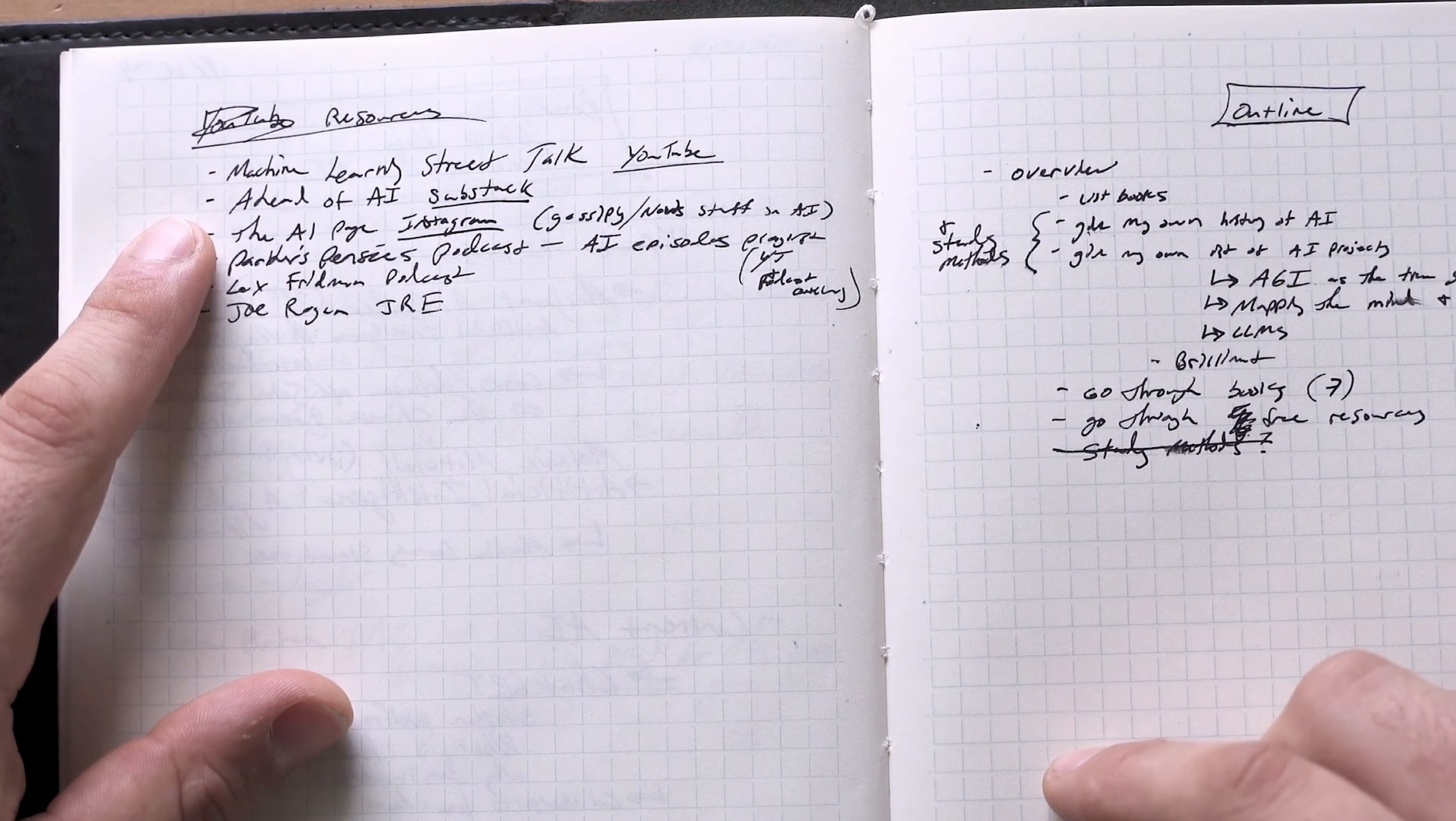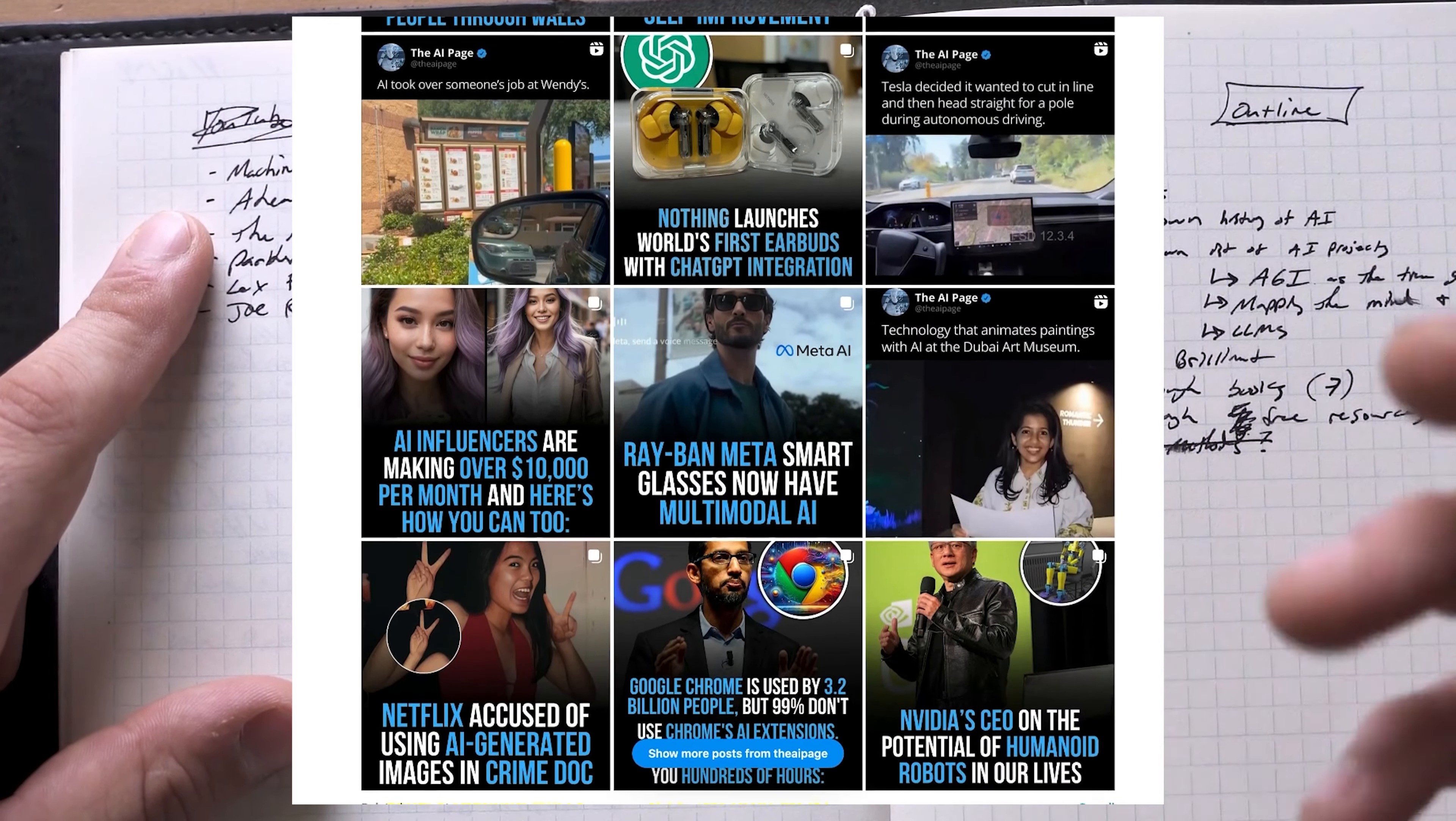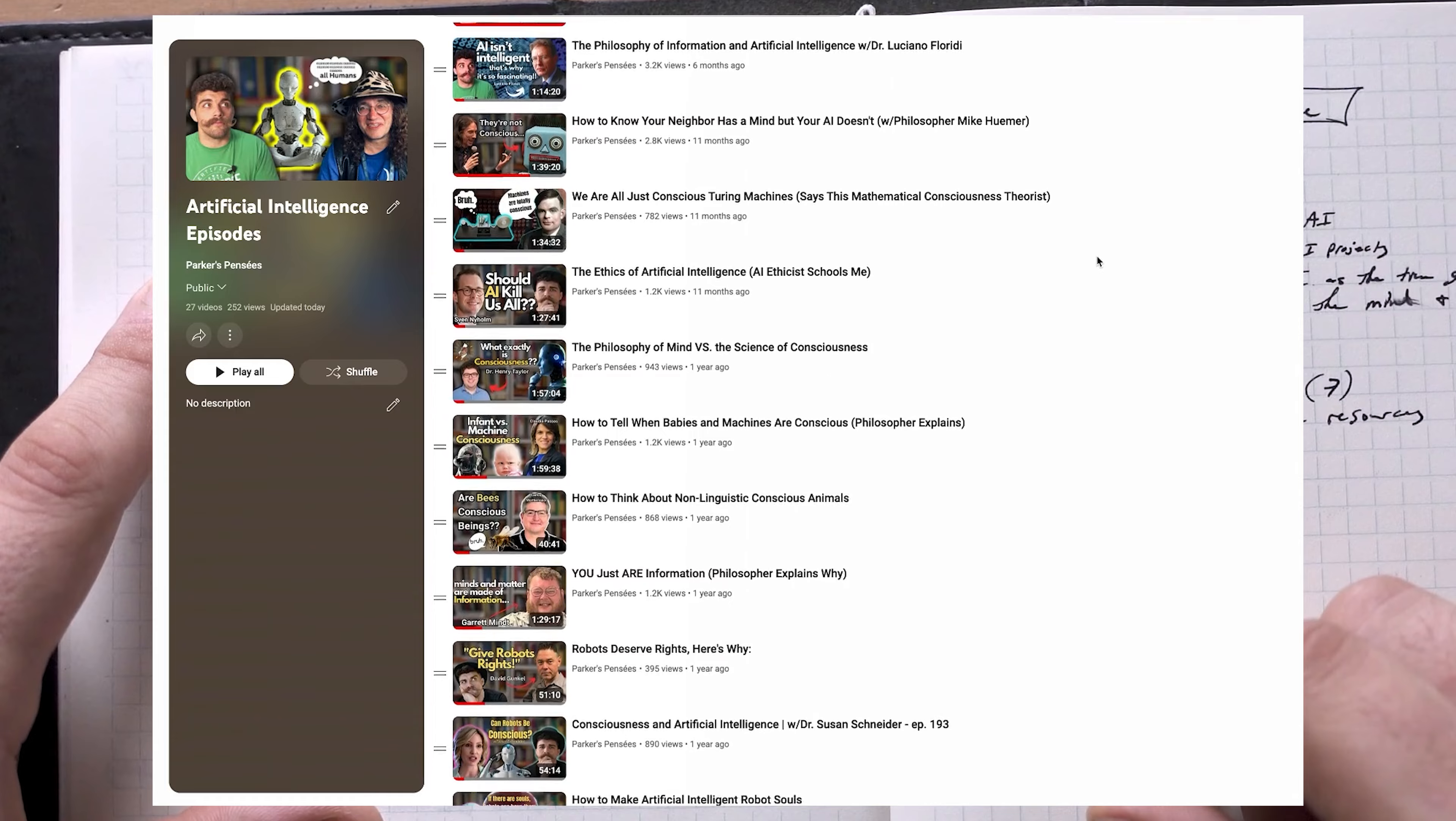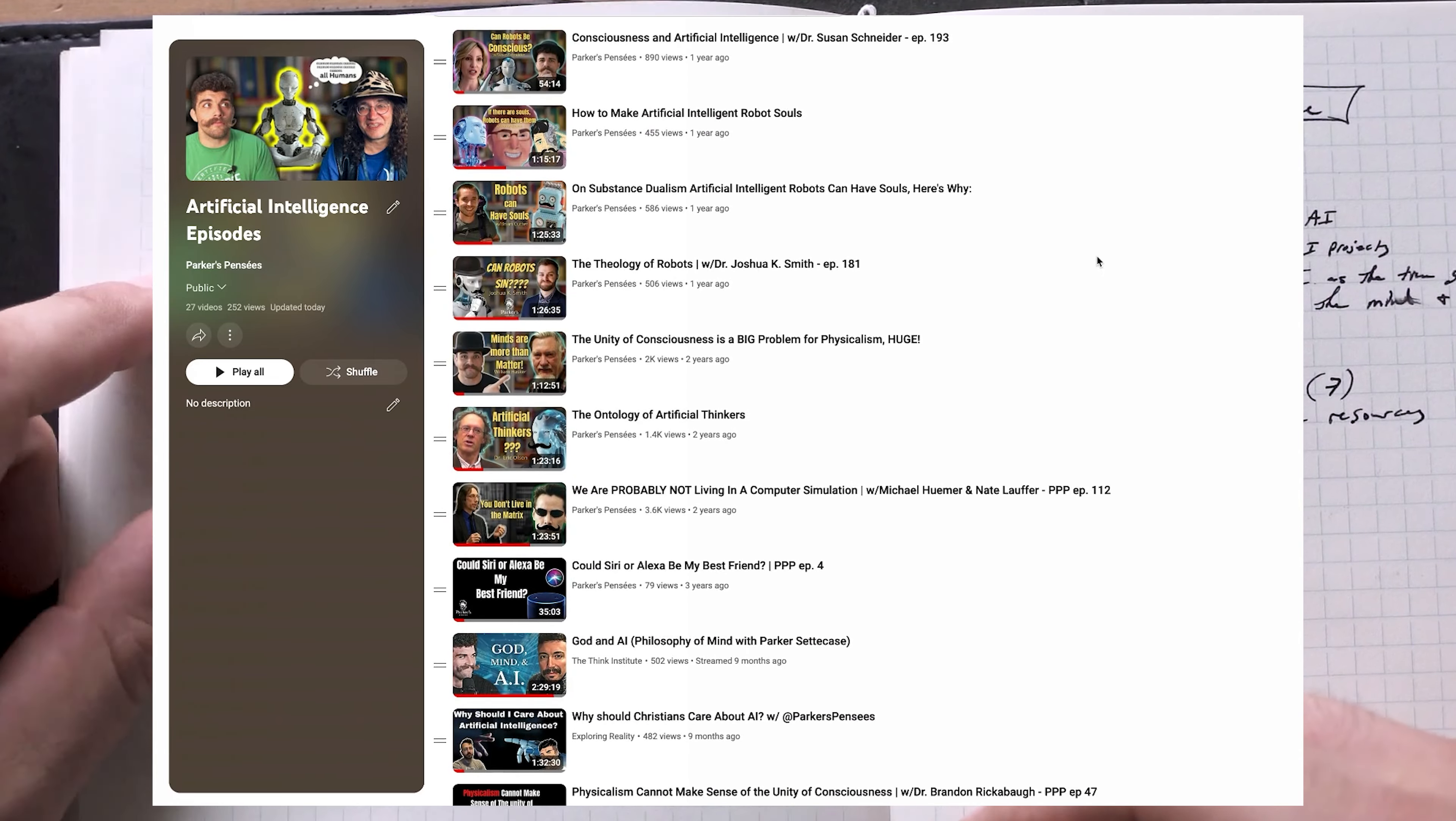If you're on Instagram, you might want to check out the AI page. This is kind of like some gossipy news stuff, but it'll keep you apprised of all the new developments going on in AI and show you a lot of cool videos, which may actually terrify you. So maybe don't watch this before bed or you'll have nightmares. Then there's also my podcast. I've had a lot of really cool philosophers and AI engineers on my channel in order to help me understand what I've been reading and learning. And I've made a playlist of only the AI episodes. So you can find that link in the description along with these other links.